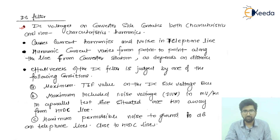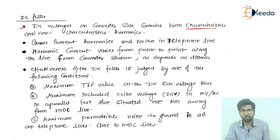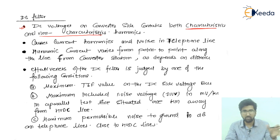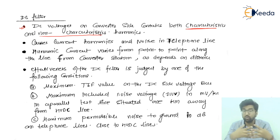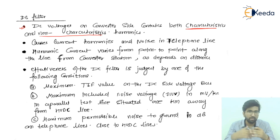The DC voltages on the converter side contain both characteristic harmonics and non-characteristic harmonics. When we talk about the converter side, we have the rectifier and the inverter — two converter stations. Between both converter stations there is the HVDC transmission, which will have characteristic harmonics and non-characteristic harmonics. The characteristic harmonics follow the relation NP ± 1. If a harmonic does not follow this relation, it is called a non-characteristic harmonic.